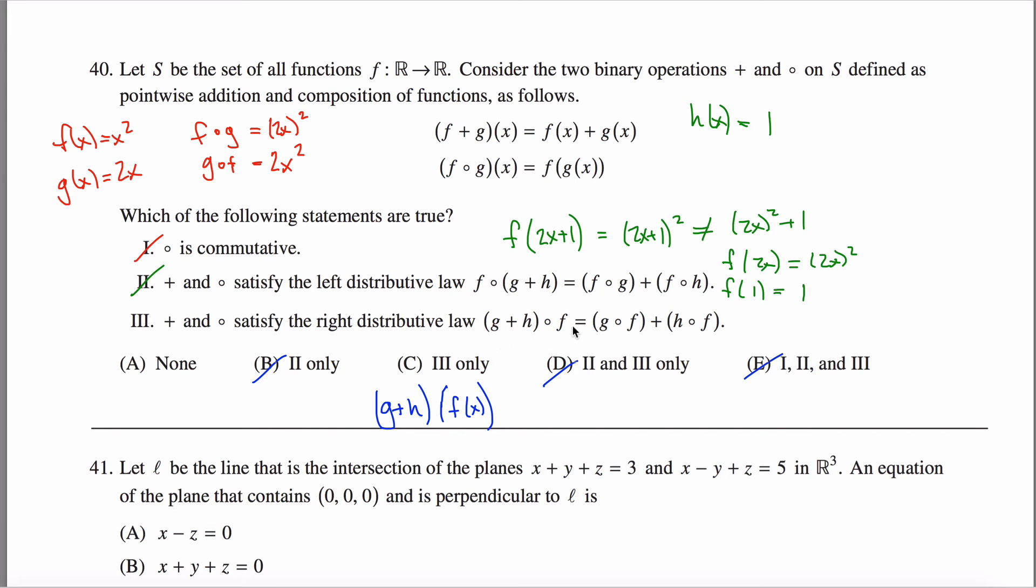All right, so g plus h of f is really just asking me what would happen if I put this thing f into this function g plus h. So it's asking me this right here, well, going back to my definitions up here, g plus h of some input is just equal to g of that input plus h of that input. This would give me g of f of x plus h of f of x.